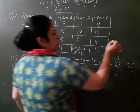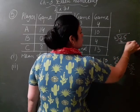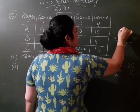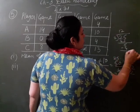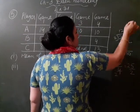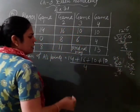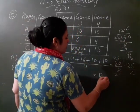Ja hum 25 ko 2 se divide karte hai. 2 times 1 is 2, so 5, 2 times 2 is 4, 1. Then decimal laga ya, 0. So its average marks becomes 12.5.